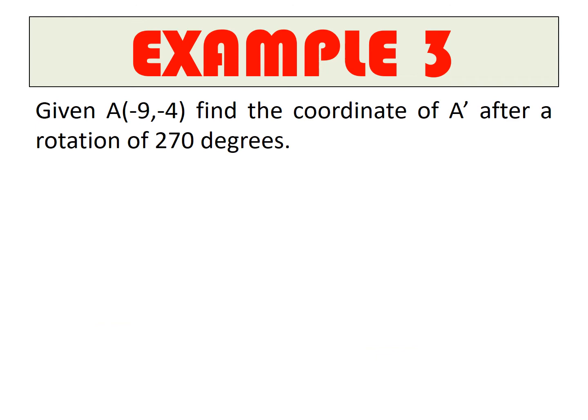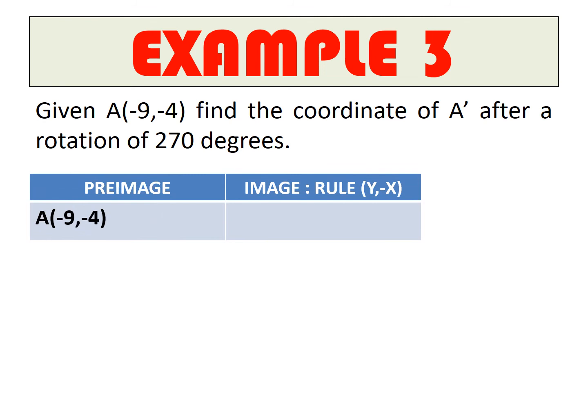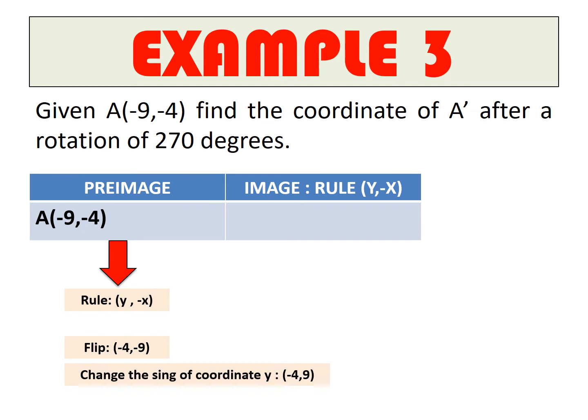Example 3: Given point A at (-4, -9), find the coordinate of A prime after a 270° rotation. Create a table. For 270°, you flip the coordinates and change the sign of the Y coordinate. After flipping, you get (-9, -4). Then change the sign of the new Y: -9 becomes positive 9. The answer is (-9, 4).